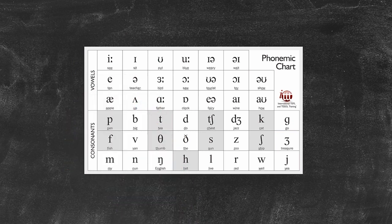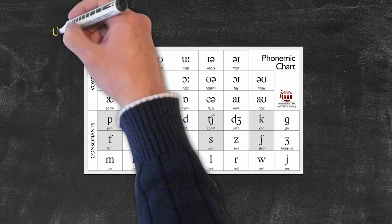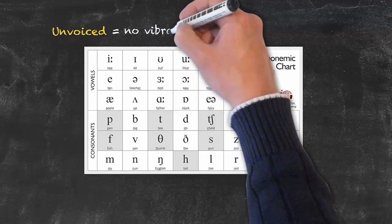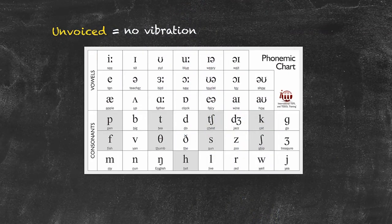The shaded symbols represent what are called unvoiced phonemes. An unvoiced phoneme doesn't require any vibration in our vocal chords in order to be made.